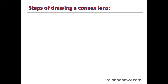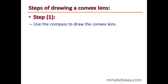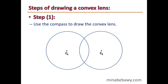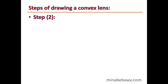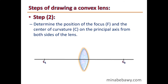Steps for drawing a convex lens: Step 1 — use a compass. Draw a line segment of length 11 cm. Using its starting point as center with a radius of 6 cm, draw the first arc. Then using the ending point as another center, draw a second arc. The two arcs intersect to form the convex lens shape after removing extra parts. Step 2 — determine the position of the focus, which is at the midpoint between the optical center and the center of curvature, on the principal axis from both sides of the lens.